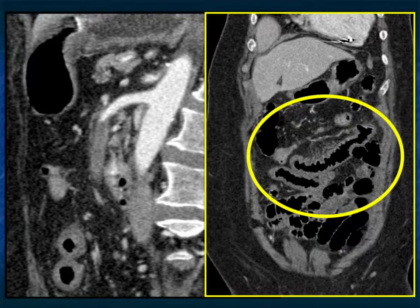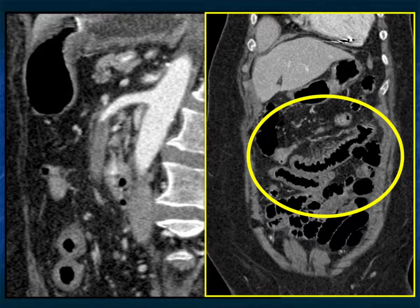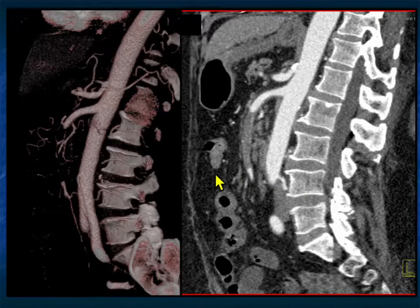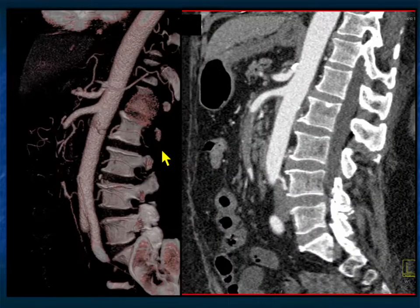Another patient: look at the bowel thickening — it's concerning, and it was ischemic bowel. You can see the SMA looks great, but then five or six centimeters down there's extensive thrombus in the SMA.